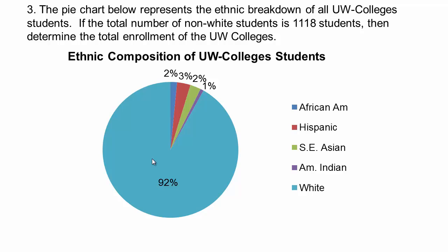So here's some information. Sometimes information is given to you in form of a pie chart, and you have to understand what these different percentages mean. The pie chart here is representing the ethnic composition of University of Wisconsin College students. There are 1,118 students that are non-white students, and they're asking you what's the total enrollment of the colleges.